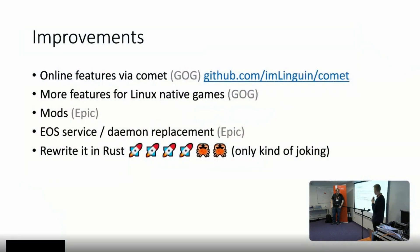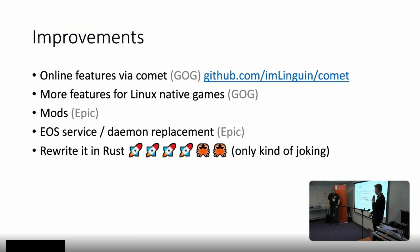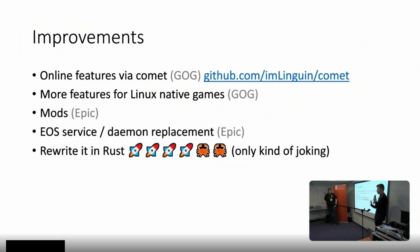So, future plans and dream section. We want to support online features via Comet. This is a currently working project - it's written in Python but we are going to rewrite it in Rust to support simultaneous connections, and maybe support more offline gameplay so we can still have statistics while being offline. We also want more features for Linux native games, similar to what we can expect from Windows and Mac builds, like maybe a rollback feature - but that requires cooperation with GOG and we're not sure when that will happen.